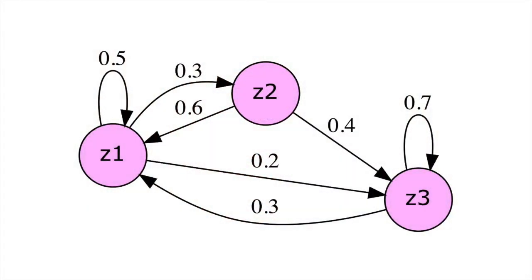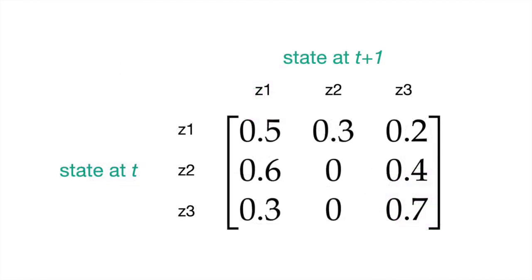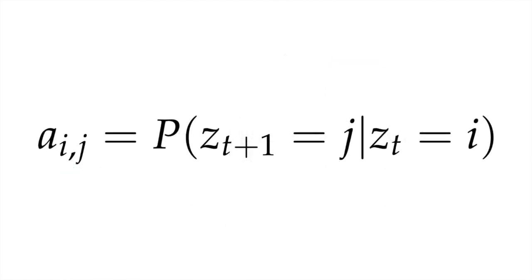We can represent this behavior of changing between states with defined probabilities in a graph form, where the nodes represent the states and the edges represent the transitions from state to state. Alternatively, we can represent this graph in matrix form, where all of the entries in the matrix represent the probability of going from one state to another. In particular, the element at row i and column j will represent the probability of transitioning from state i to state j.